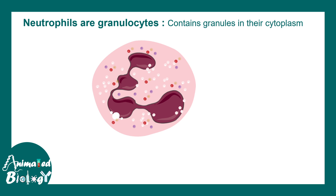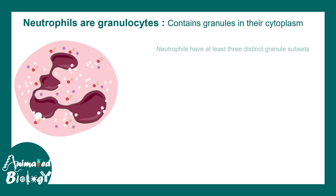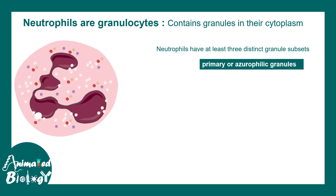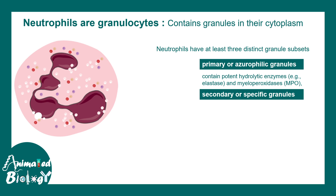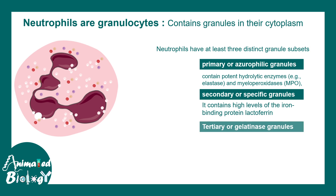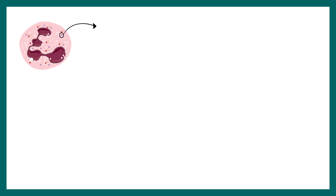There are two most important categories of granules. First are primary granules, also called azurophilic granules, which contain the most potent hydrolytic enzymes such as elastase and myeloperoxidase. Secondary or specific granules contain high levels of iron-binding proteins such as lactoferrin, along with other enzymes with specific immune functions. There are also tertiary or gelatinase granules which contain the enzyme gelatinase. Each of these granule contents is important for innate immune response.